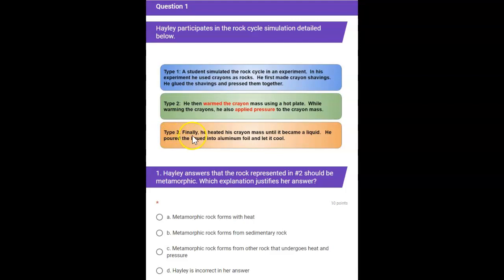For Type 3, finally he heated his crayon mass until it became a liquid. He poured the liquid into aluminum foil and let it cool.